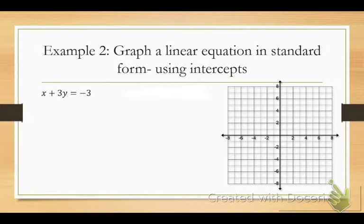An x and y intercept is basically this: if you have a certain total amount, how much of your x could you have, or how much of your y could you have? It's an all-or-nothing scenario — you're not even considering that y has a value when you're trying to find the x-intercept. So here's what it looks like: x plus 3y equals negative 3.